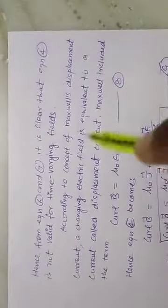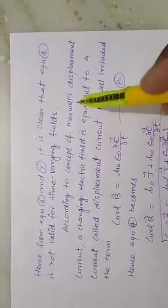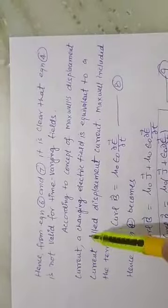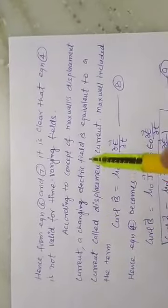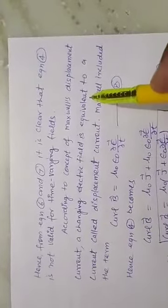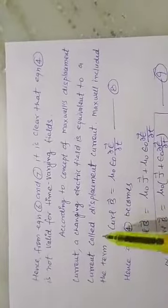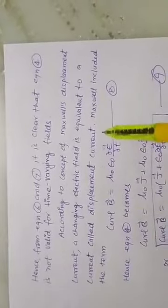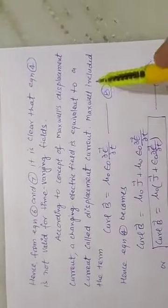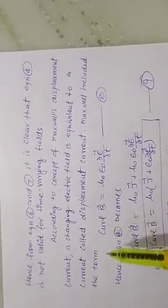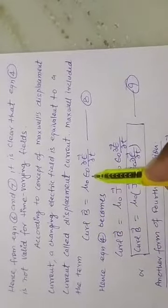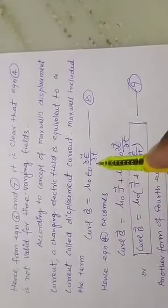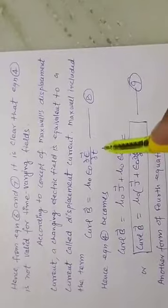According to the concept of Maxwell's displacement current, a changing electric field is equivalent to a current called displacement current. Maxwell included the term: curl B vector equals μ₀ε₀ ∂E vector/∂t.